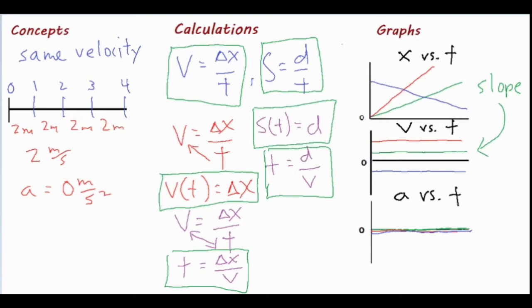The final graph you might see for constant velocity would be something completely motionless — that would be any line that is completely flat on the position versus time graph. That flat line could be anywhere, whether at 10, 5, or 2, because you're sitting at the same position, meaning you're not moving — just farther or closer from the origin. If there's no slope, you have exactly zero velocity, and the same zero acceleration as usual.